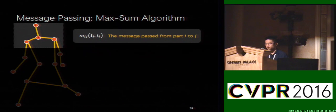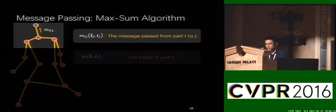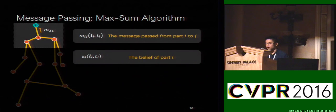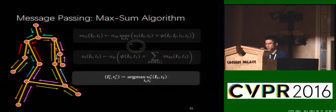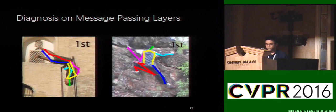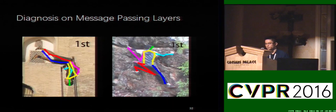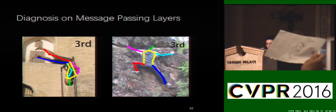To infer the best pose configuration, we use the max-sum algorithm. We denote m_ij as the message sent from part i to part j, and u_i as the belief of part i, which is a combination of the unary term and the received messages. The algorithm updates the messages and beliefs iteratively, and the optimal location and mixture type of each part can be obtained by the maximum assignment. In experiments, we found that three message-passing layers produce satisfactory results, and we can see that the results improve as we increase the number of message-passing layers.